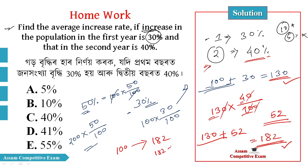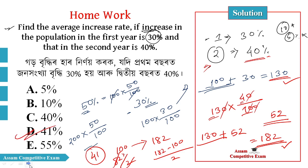182 minus 100 divided by 2. 82 divided by 2 is 41%. So the answer is 41%, which is option D — correct.